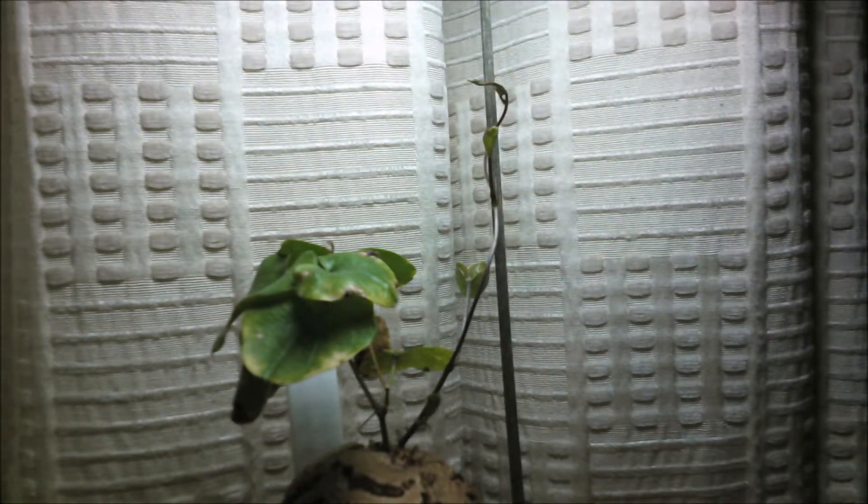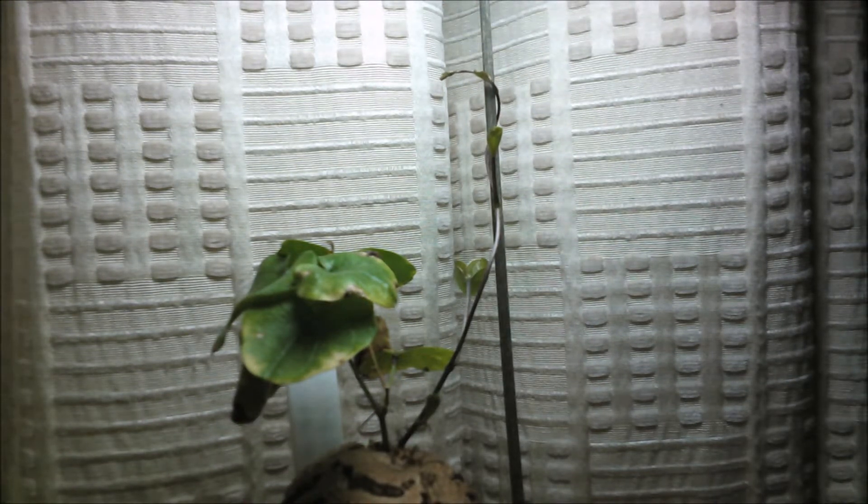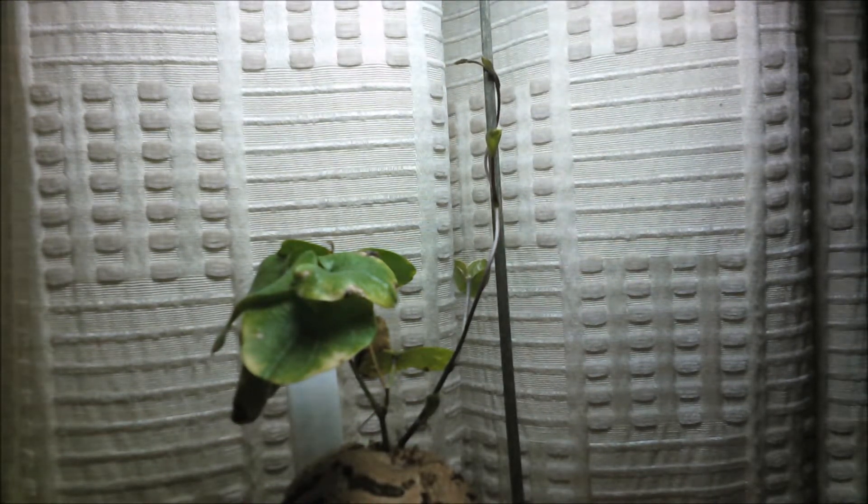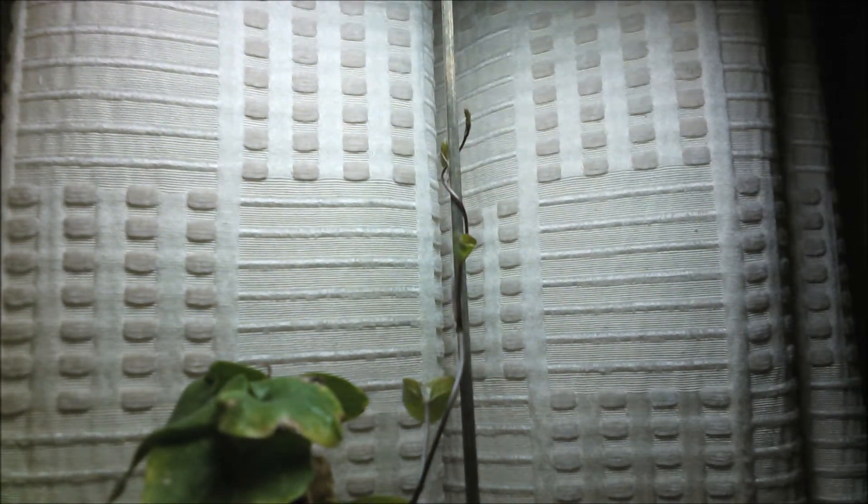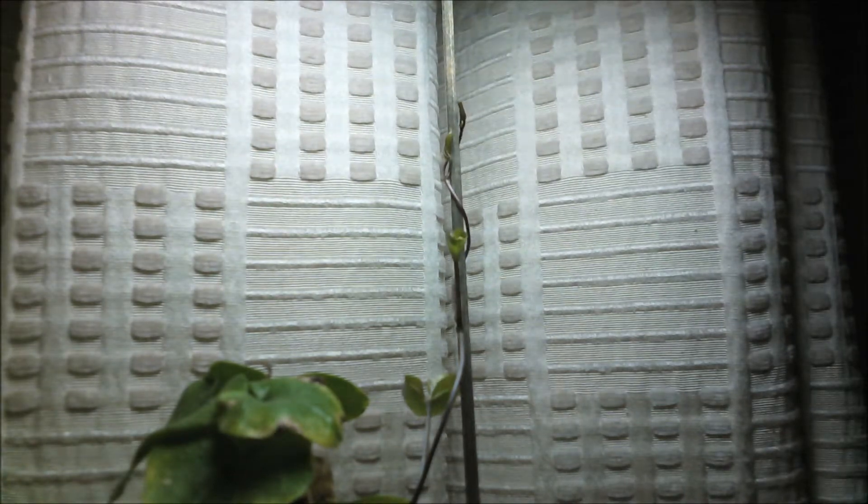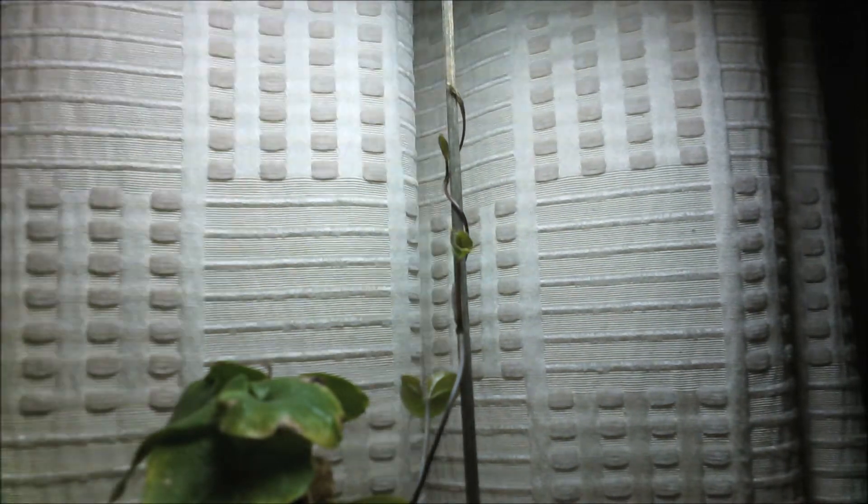And what this does is it encourages the stem to curve round it more because for example in this instance the cells on the left are growing more than the cells on the right and this turns it into a clockwise spiral and reinforces the coiling even tighter.